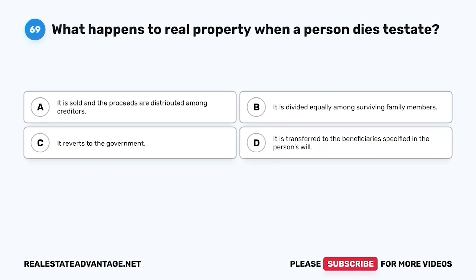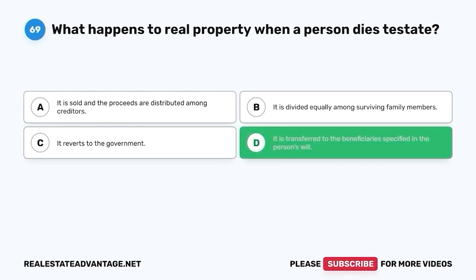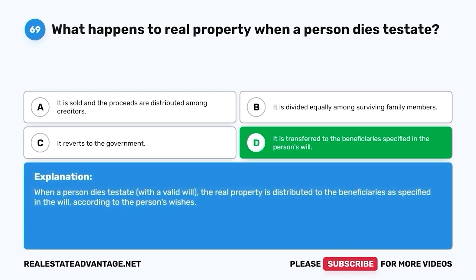Question 69. What happens to real property when a person dies testate? A. It is sold and the proceeds are distributed among creditors. B. It is divided equally among surviving family members. C. It reverts to the government. D. It is transferred to the beneficiaries specified in the person's will. The correct answer is D. It is transferred to the beneficiaries specified in the person's will. When a person dies testate with a valid will, the real property is distributed to the beneficiaries as specified in the will, according to the person's wishes.